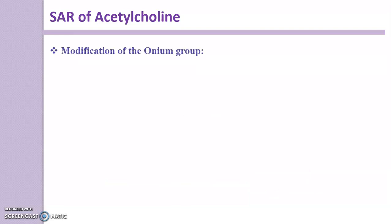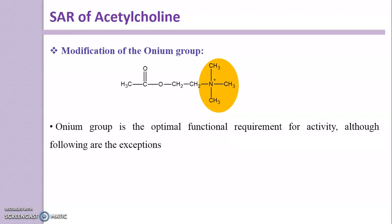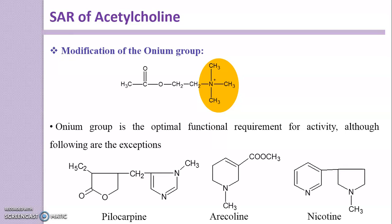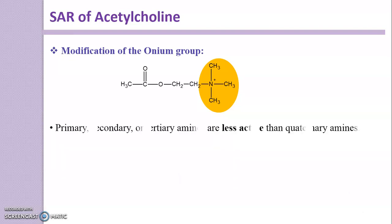First is about the modification of the onium group. The onium group is the optimal functional requirement for activity — it is essential for showing activity. Although the following are exceptions which don't have the onium group but still have cholinergic action: pilocarpine, aracholine, and nicotine. These are alkaloids having very good nicotinic as well as muscarinic action, same as acetylcholine, even though they lack the onium group.